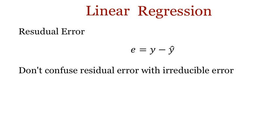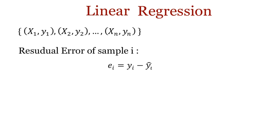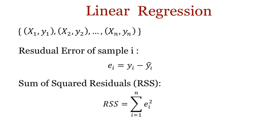Now, don't confuse this residual error e with the irreducible error epsilon. By definition, epsilon is a part of the residual error. Say there are n sample data points where the residual error of the ith sample is ei. Our goal now is to minimize the sum of squared residuals, or RSS. We take the squares because the magnitude of the error matters, regardless of whether our model outputs a higher or lower prediction.